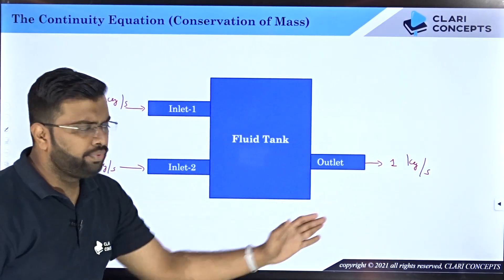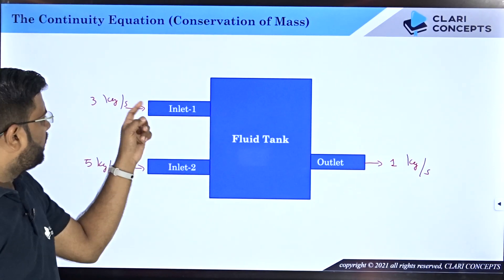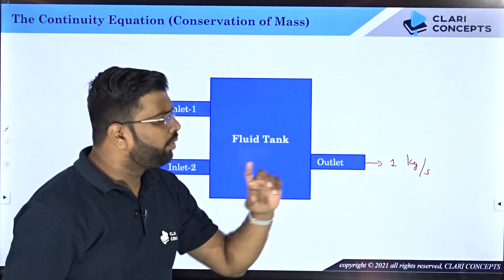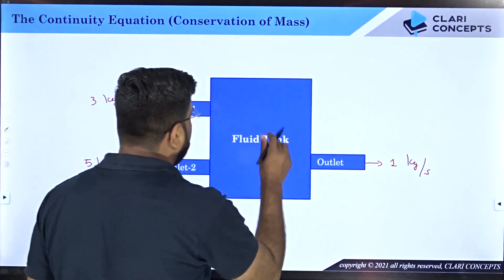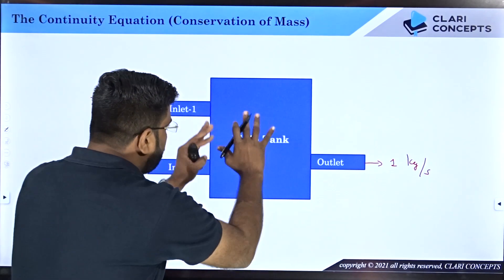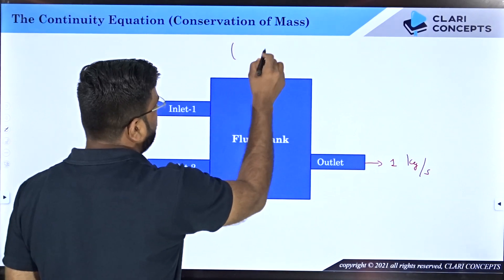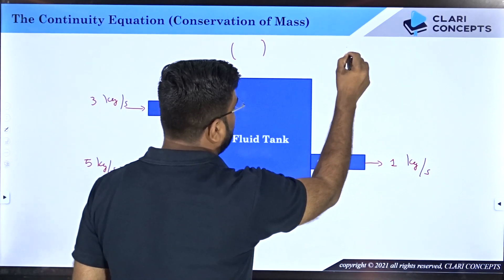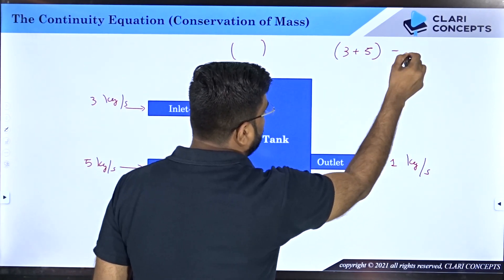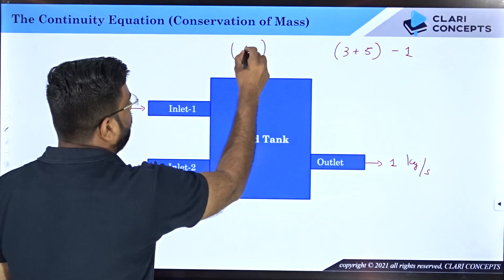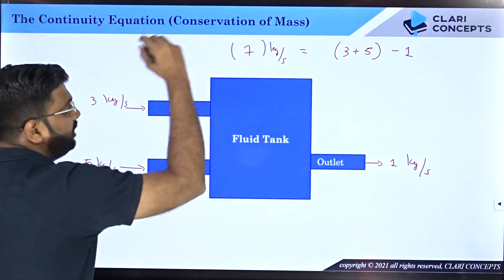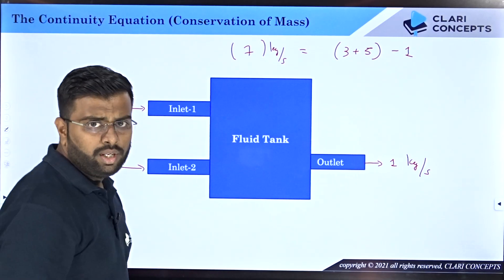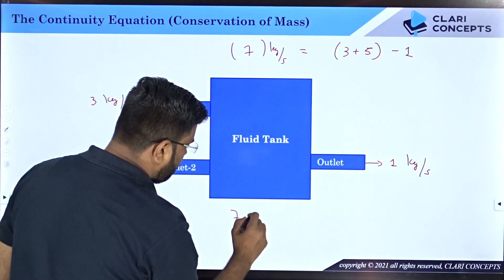In every second, 3 kg is getting in from inlet one, 5 kg is getting in from inlet two, and 1 kg is coming out. So what is the change in mass of this fluid tank — how much mass is conserved every second in this tank? You will say 3 plus 5 entry is 8 and outgoing is 1, so the difference is 7. The tank will have 7 kg of mass added every second — so the mass of this tank will increase by 7 kg per second.